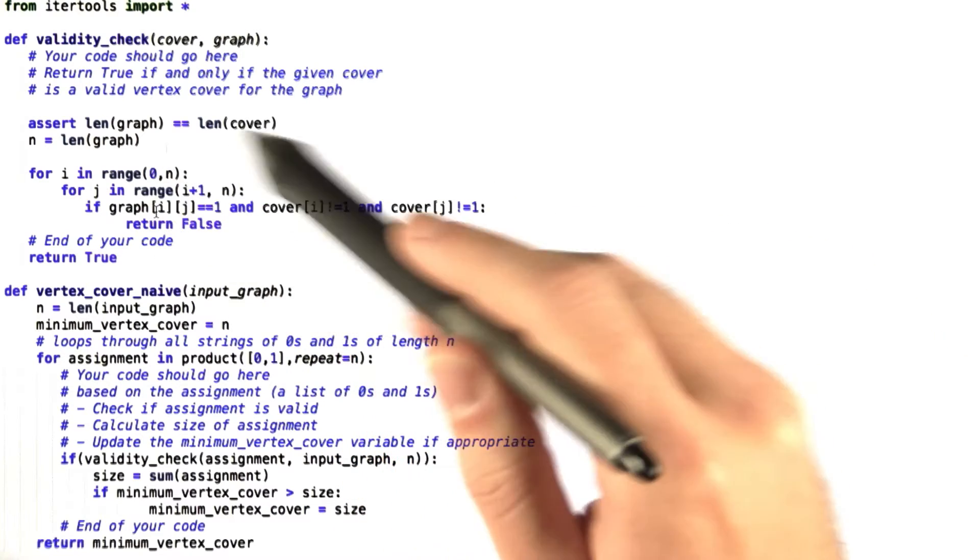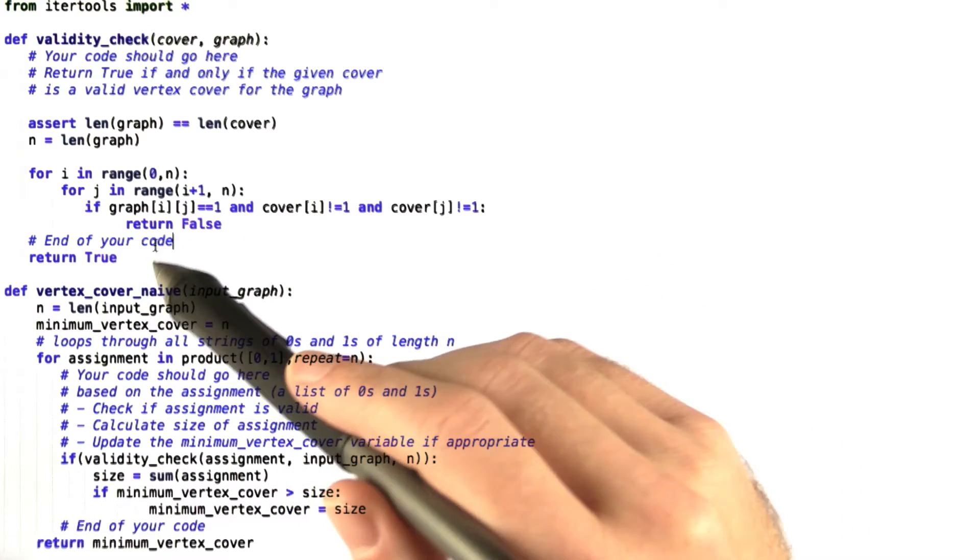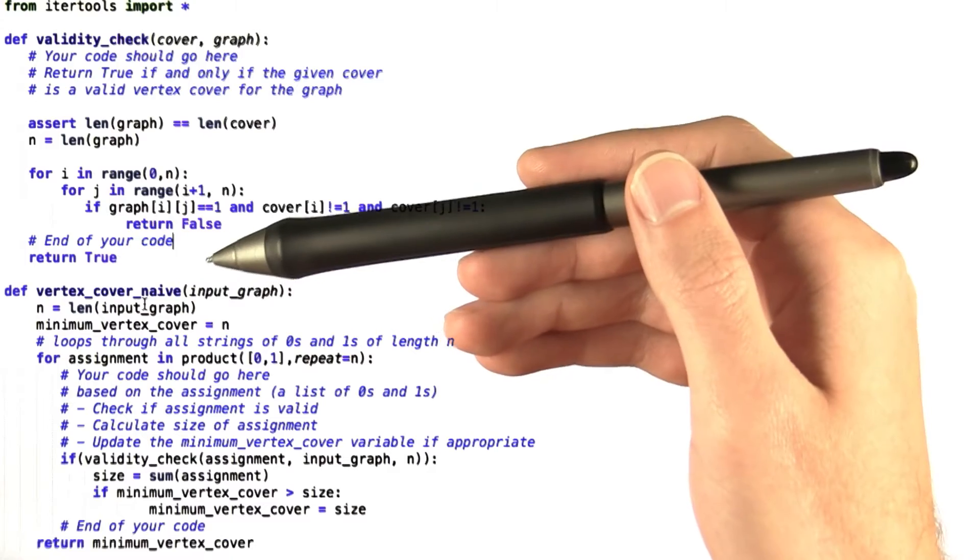We check every single one of those, and if we fall through all of those, then we go ahead and return true, and it is a valid vertex cover.